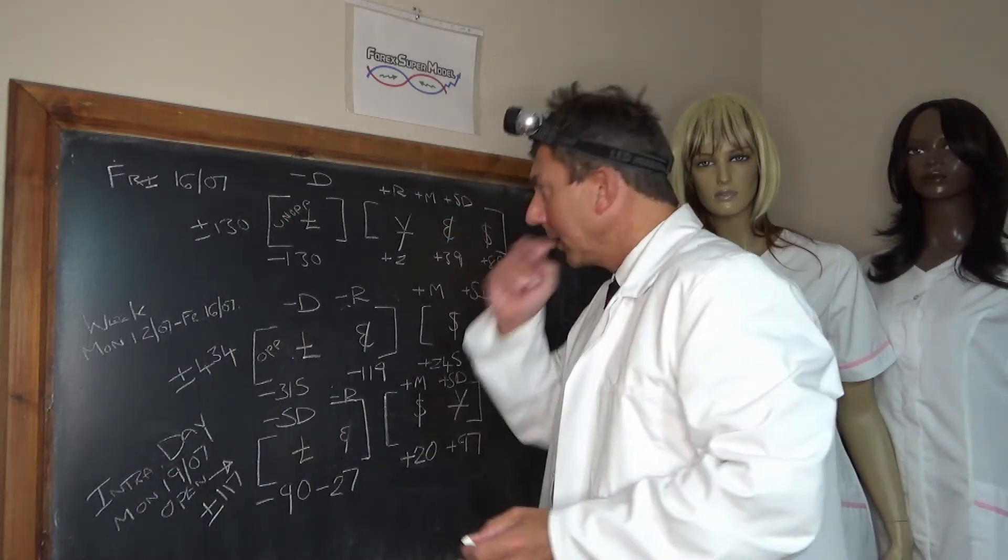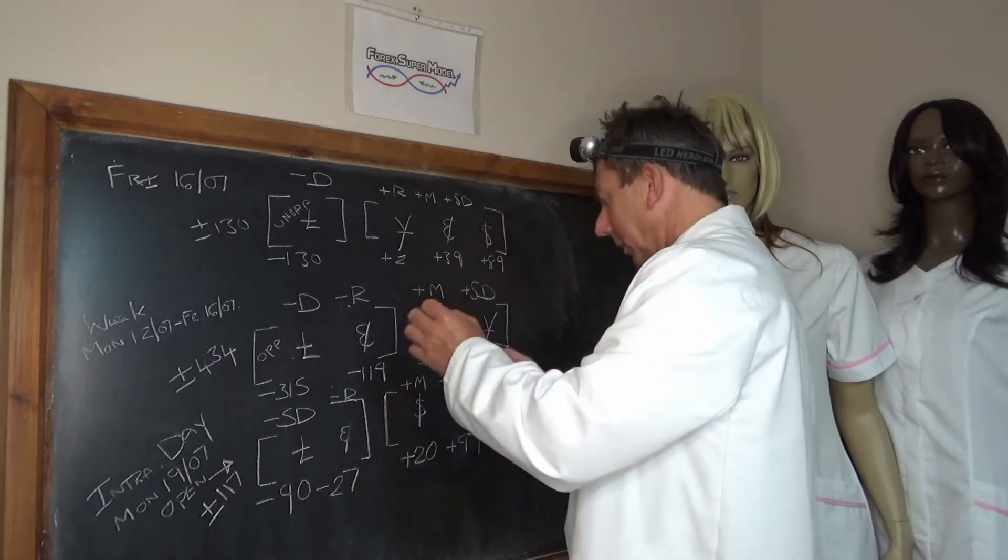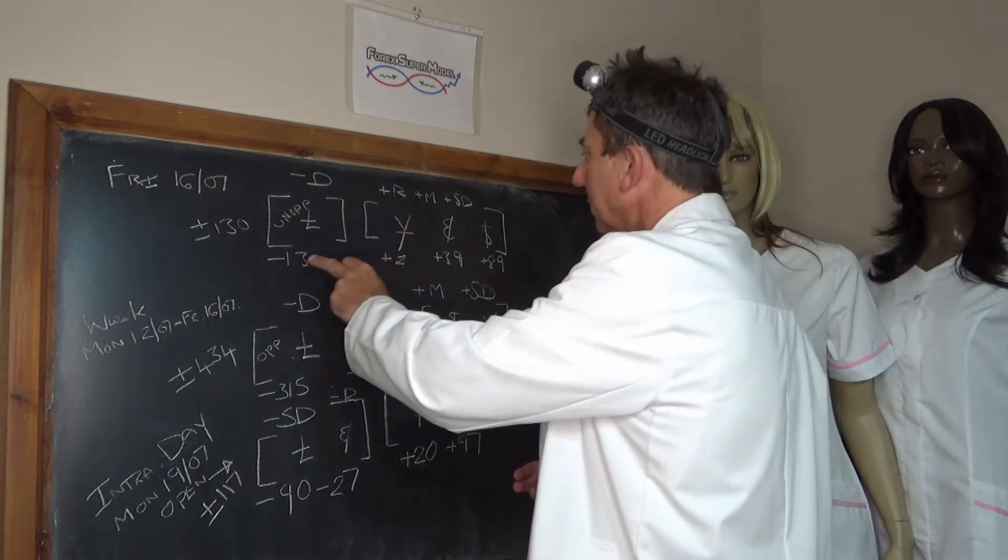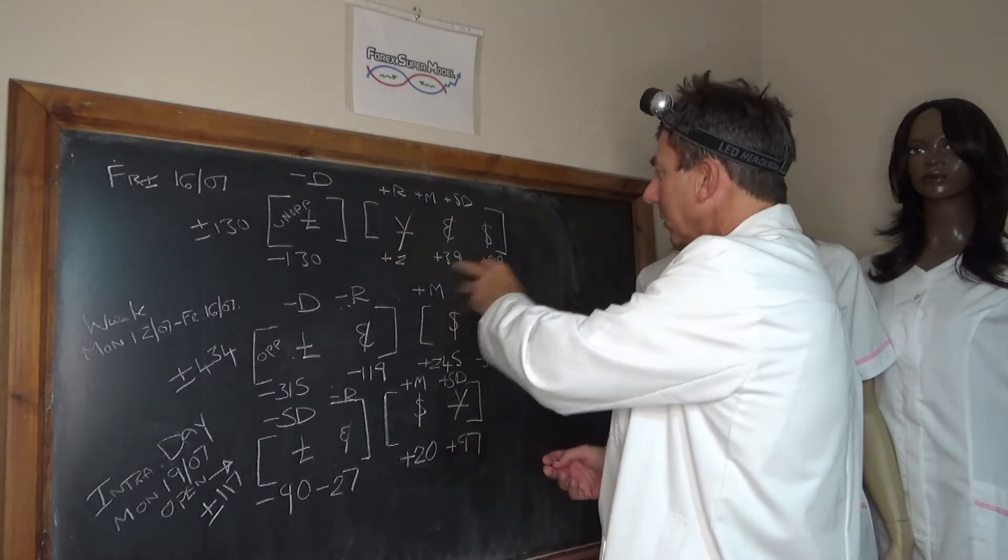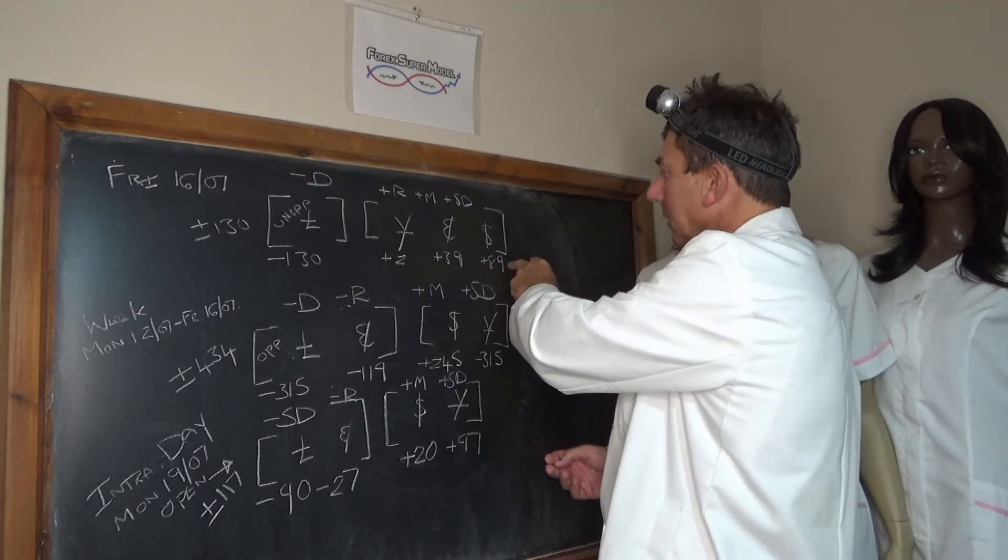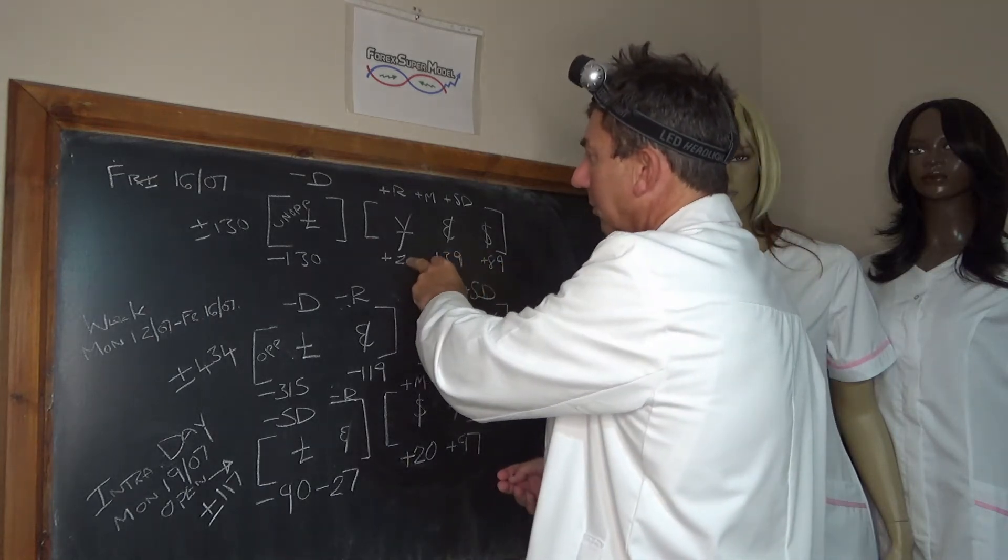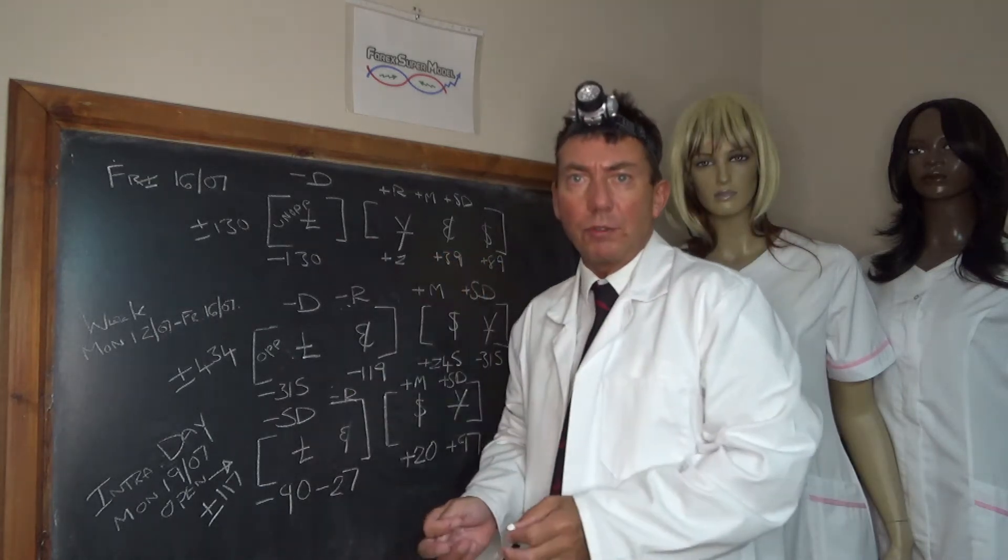Friday the 16th then, the last full trading day, we had a negative unopposed driver in the pound at minus 130. No backdoor flows, the opposing positive flows mainly going into the dollar at plus 89, into the euro at plus 39, and the yen was the positive rock at plus 2, activity plus or minus 130.